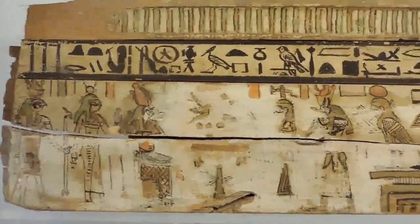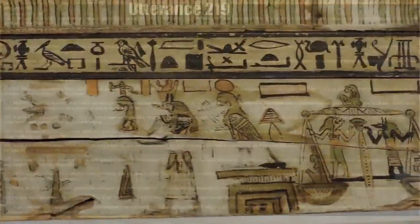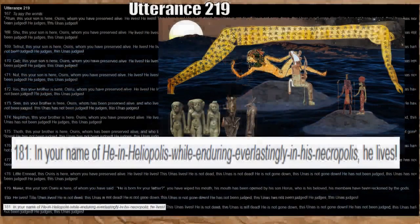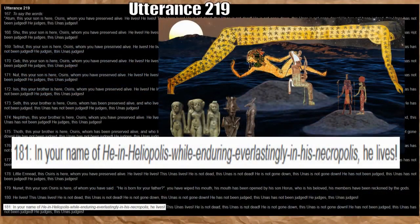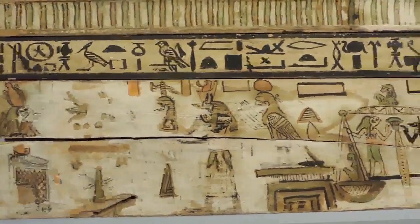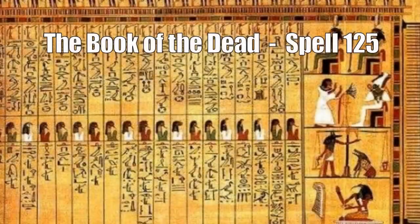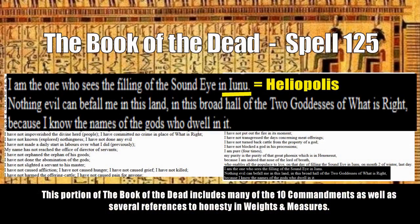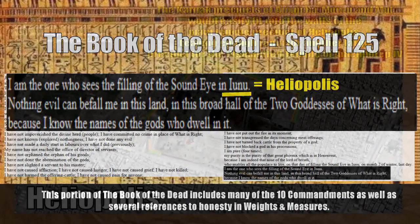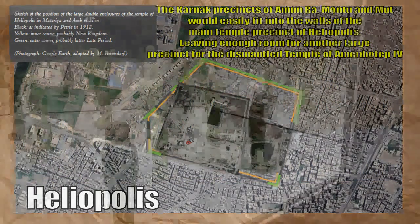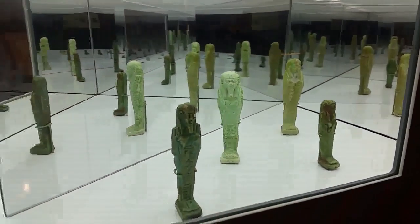Though more than just its size or age, the importance of Heliopolis is presented in some of the ancient Egyptians' most important writings: the pyramid texts and the Book of the Dead. Utterance 219 of the pyramid texts details the birth of the gods of the Ennead beginning with Atum, whose main temple was at Heliopolis — the mound upon which Heliopolis was built being considered the very place that the mound of Atum was raised from the primordial waters. The Book of the Dead also references Heliopolis in spell 125, which also lists several of the commandments from the Bible and places a special emphasis on honesty with weights and measures.